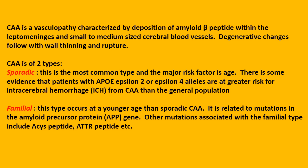CAA is of two types. Sporadic: this is the most common type and the major risk factor is age. There is some evidence that patients with ApoE epsilon 2 or epsilon 4 alleles are at greater risk for intracerebral hemorrhage from CAA than the general population.